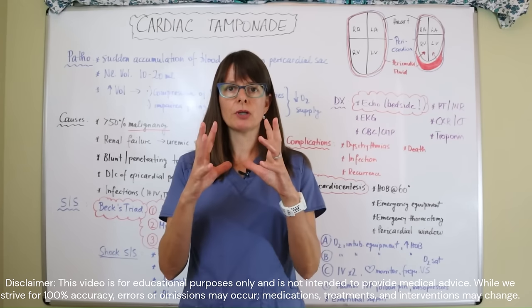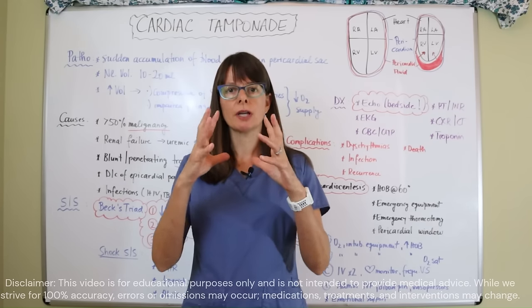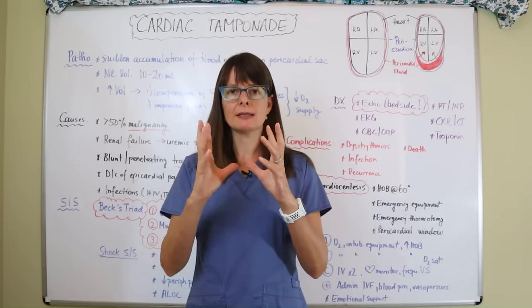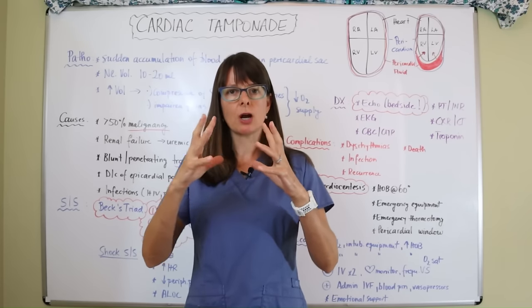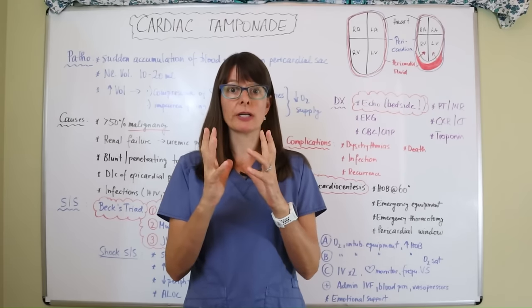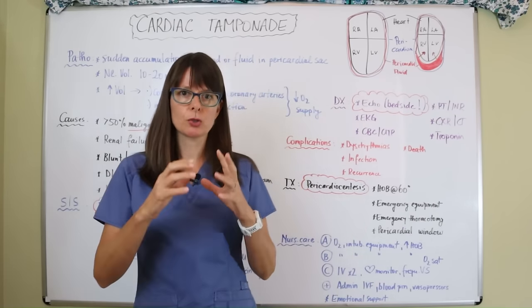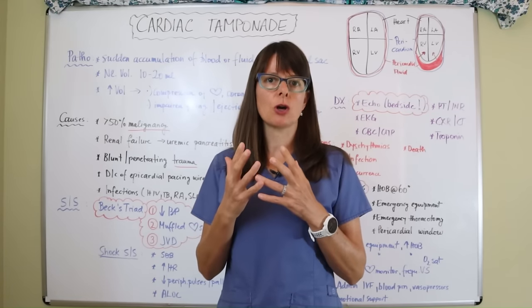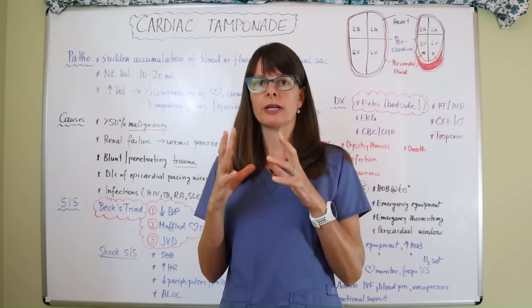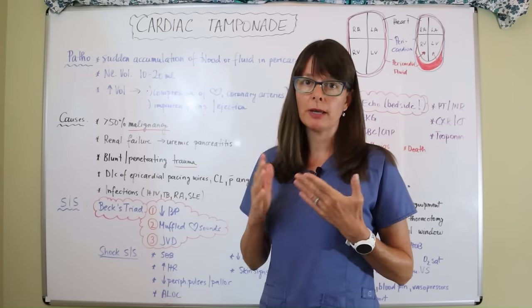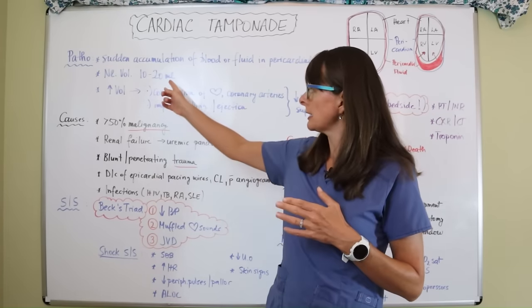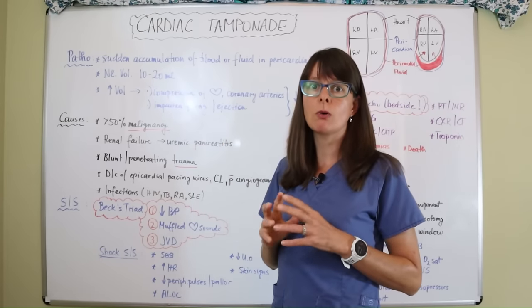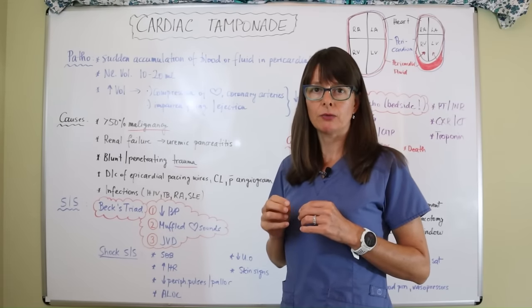Physiologically, the heart is covered by the pericardium, a layer membrane, and there's pericardial fluid inside the membrane that allows the heart to float freely in the pericardial sac. A cardiac tamponade occurs when there's a sudden accumulation of fluid in that pericardial sac — either blood or some other fluid. Normally, the volume in the pericardial sac is about 10 to 20 milliliters, a very small amount.